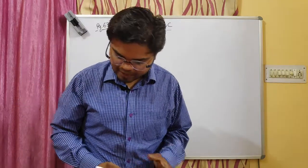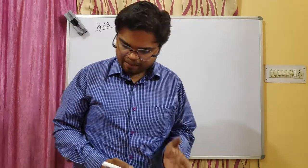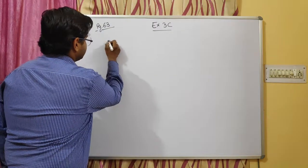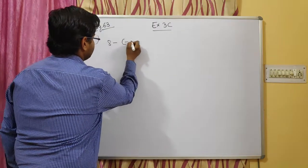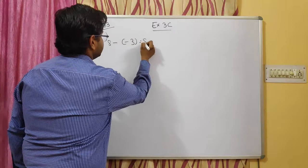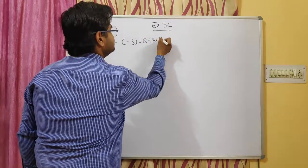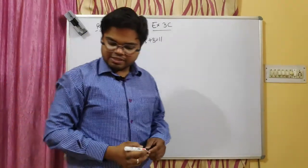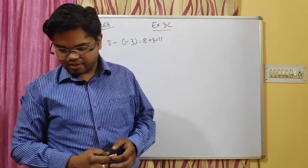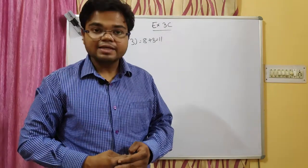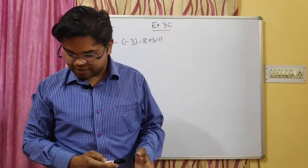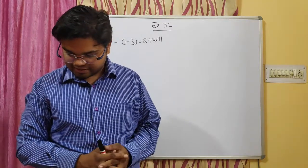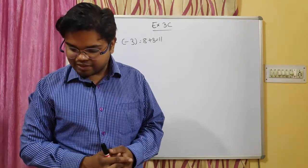Question number one: you have 8 minus minus 3. So 8 minus minus 3 becomes 8 plus 3, and the answer will be 11. In this exercise, for question number one, you need to solve the signs first, and then add or subtract according to the resulting sign.